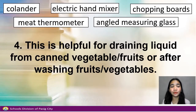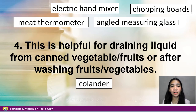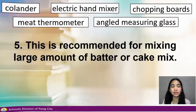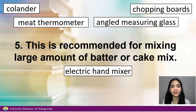Number 4. This is helpful for draining liquid from canned vegetables or fruits, or after washing fruits and vegetables. Answer: Colander. Number 5. This is recommended for mixing large amounts of butter or cake mix. Answer: Electric hand mixer.